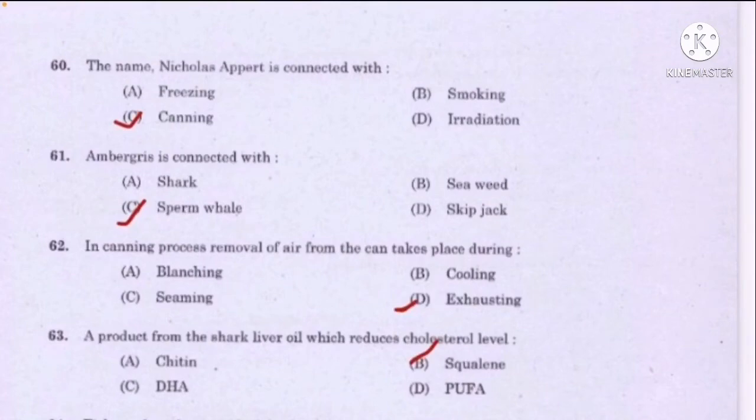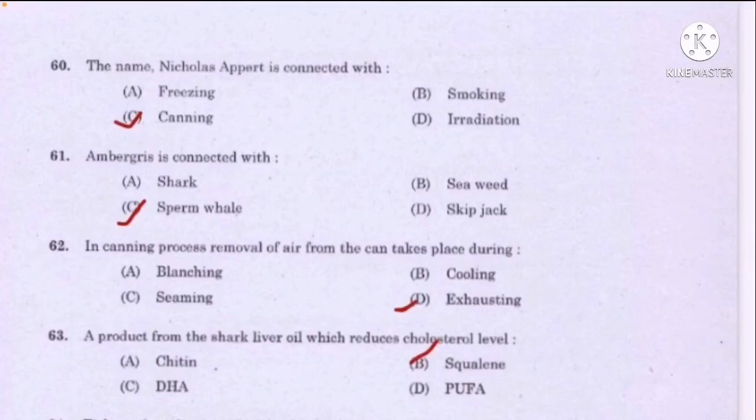The name Nicholas Appert is connected with — option C: canning is the correct answer. Ambergris is connected with — option C: sperm whale. In canning process, removal of air from the can takes place during — option D: exhausting is the correct answer. A product from shark liver oil which reduces cholesterol level — correct answer option B: squalene.